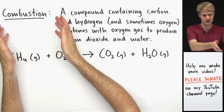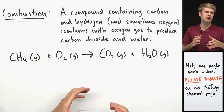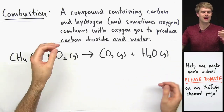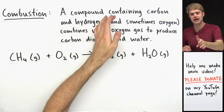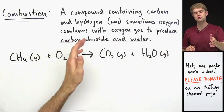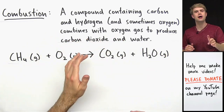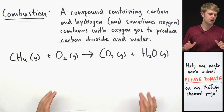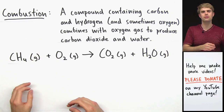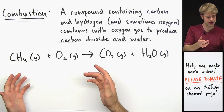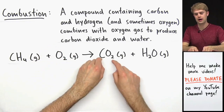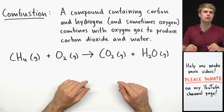Combustion reactions. Combustion is basically a fancy word for burning. When something burns, what happens is that a compound containing carbon and hydrogen, and sometimes oxygen, combines with oxygen gas to produce carbon dioxide and water. Here in my example, CH4, which is the chemical formula for methane — that's a type of natural gas — combines with oxygen, and it forms carbon dioxide and water, H2O.